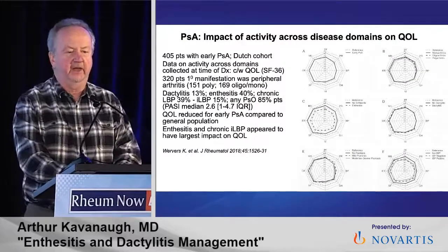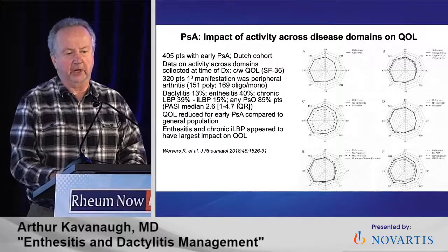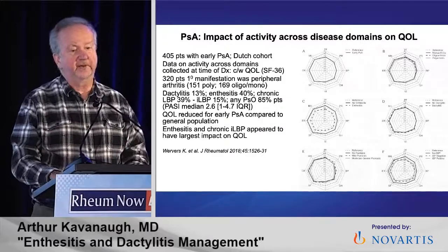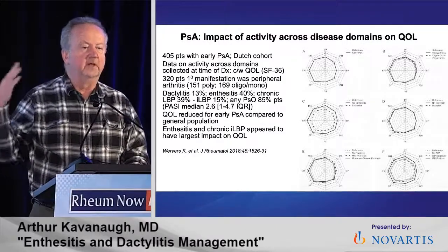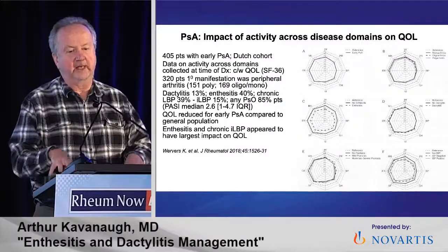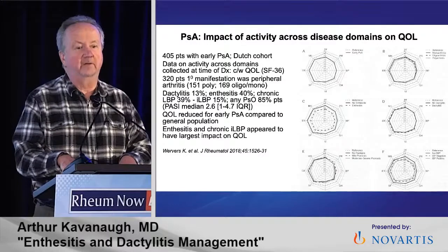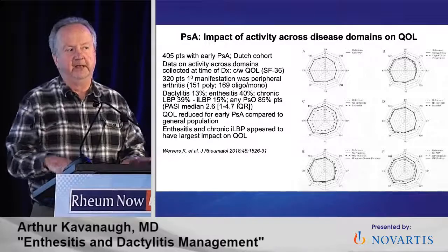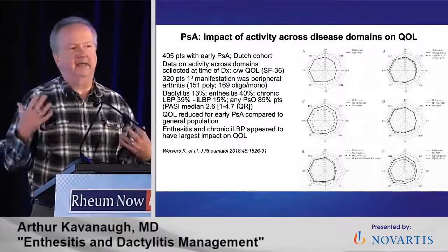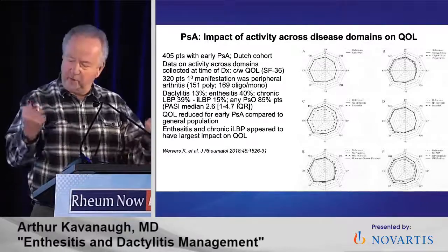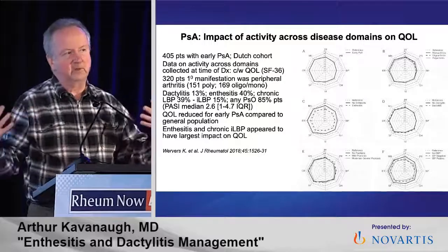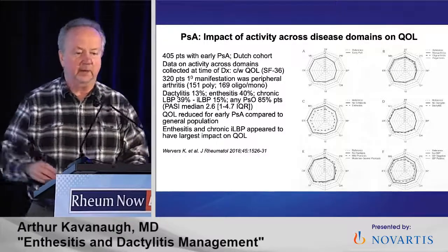Enthesitis has an outsized impact on quality of life. A study from the Netherlands looked at early psoriatic arthritis patients who had not had treatment yet — 40% had enthesitis. Looking at spider diagrams for quality of life, enthesitis had more of an impact on impaired quality of life than peripheral arthritis, which was very interesting. Enthesitis is kind of a sleeper that explains some of the outsized symptoms SpA patients have — they just feel bad but can't relate it to specific swollen joints the way RA patients can. It's more diffuse and harder to pin down because it represents enthesial involvement.